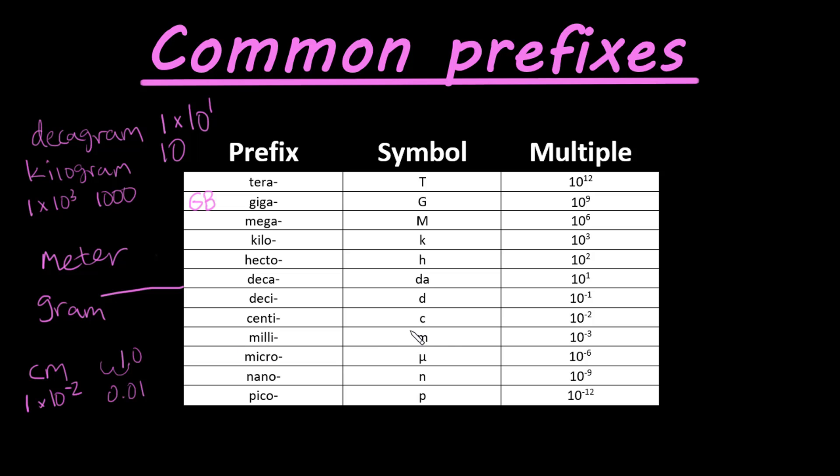Next we have milli, which is an m symbol. Multiple is 10 to the negative third. Micro, which is a mu, Greek letter mu, 10 to the negative sixth.